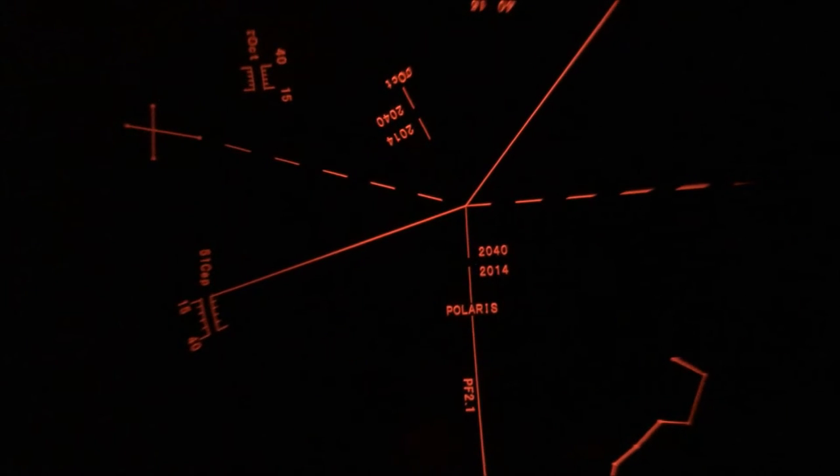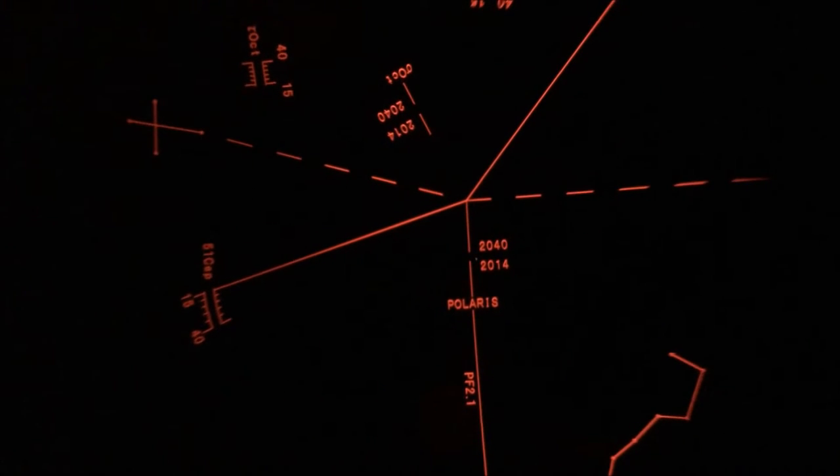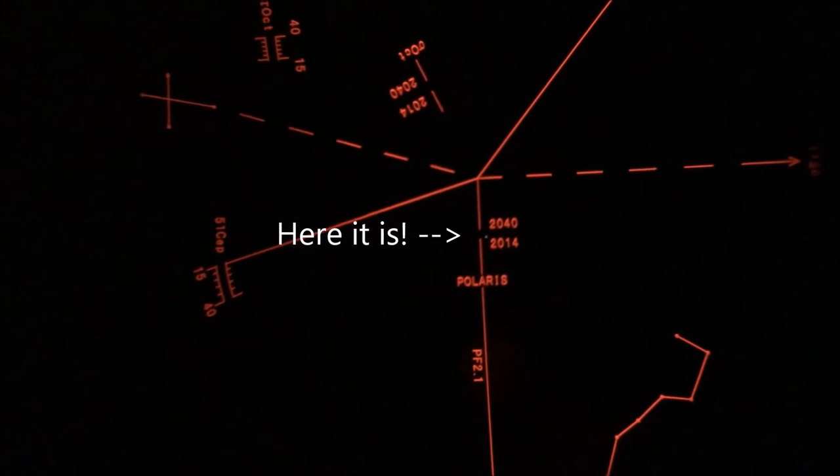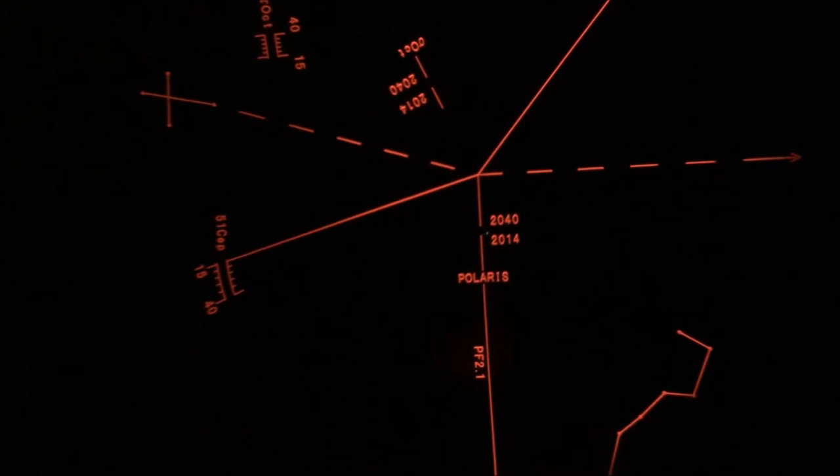You try to align Polaris to be in the gap in that line, and then simultaneously you attempt to get the two stars in Ursa Minor and Cepheus aligned.